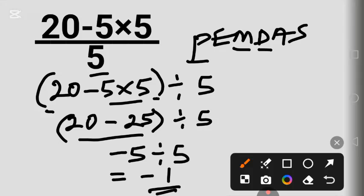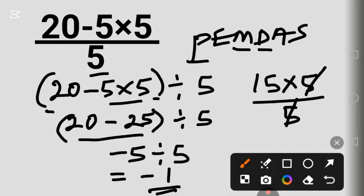Before we go, I want to show you the reason why most people get the wrong answer. They'll work from left to right: 20 minus 5 is 15, times 5 over 5. 5 will cancel 5, giving us 1, and the answer would be 15. But the answer is not 15.